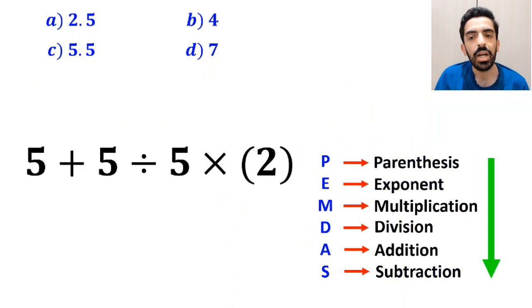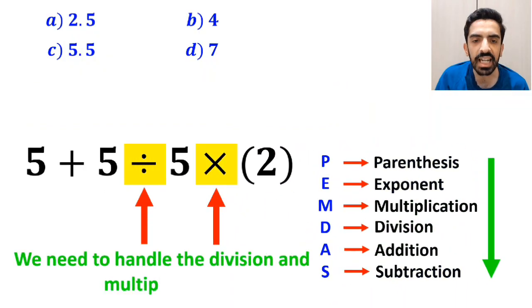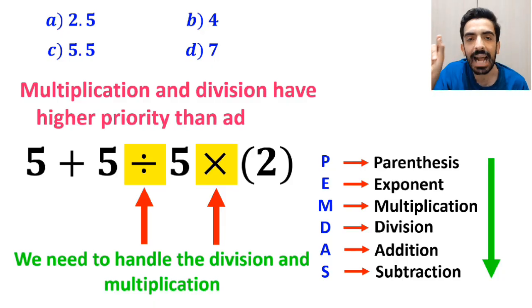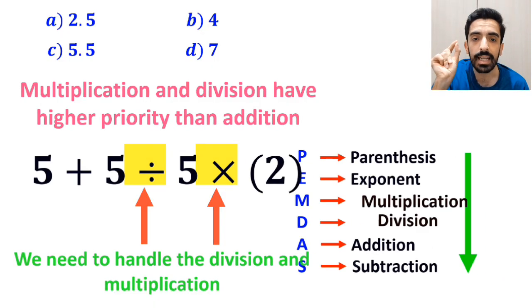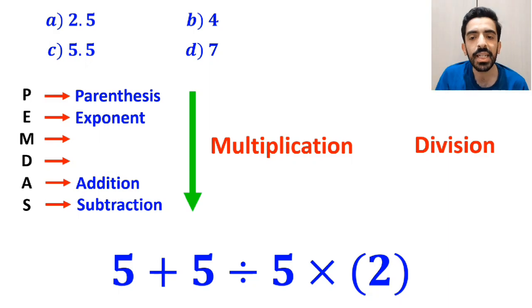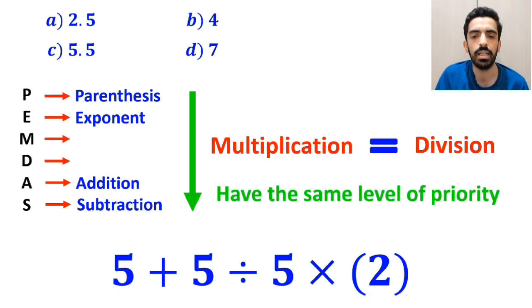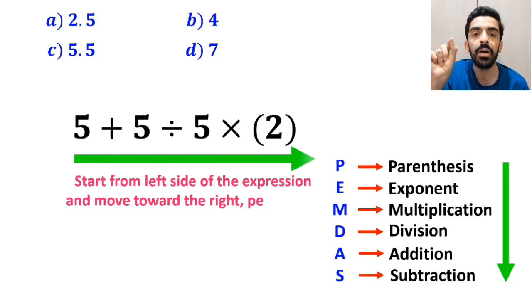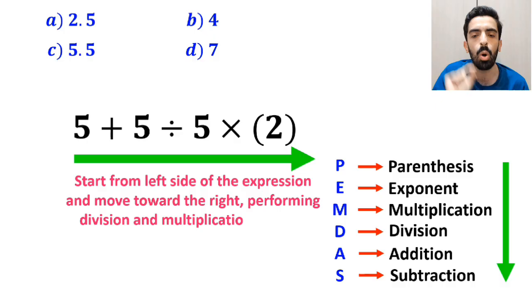In the next step, we need to handle the division and multiplication, because multiplication and division have a higher priority than addition. However, it's very important to note that in the PEMDAS rule, multiplication and division have the same level of priority. In this case, the best thing to do is to start from the left side of the expression and move toward the right, performing division and multiplication in order.